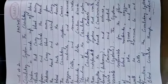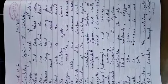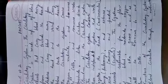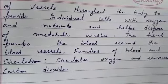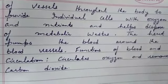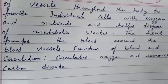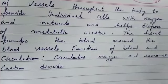Next, the functions of the circulatory system. Blood circulates through a network of vessels throughout the body to provide individual cells with oxygen and nutrients, and helps dispose of metabolic wastes. The heart pumps blood around the blood vessels. Functions of blood and circulation include circulating oxygen and removing carbon dioxide.